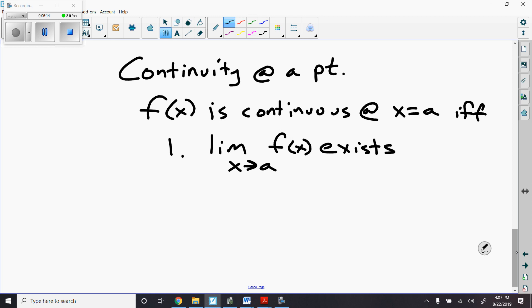So, here's what we say. F of x is continuous at x equals A if and only if. Number one, we must have a limit that exists. If the limit doesn't exist, we know we are not continuous. So, number one, limit as x goes to A of f of x exists.